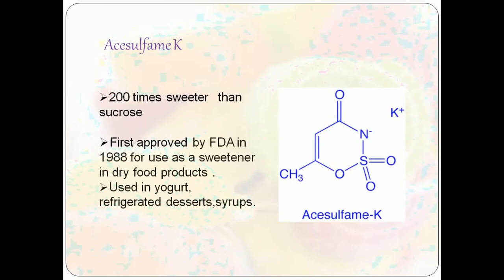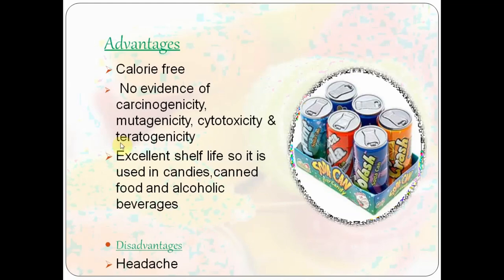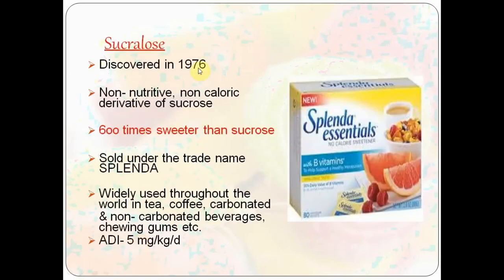Acesulfame-K is 200 times sweeter than sucrose and was first approved by the FDA in 1988. It is commonly found in yogurt, refrigerated desserts, and syrups, sold under brand names Sunett and Sweet One. It is calorie free with excellent shelf life and no evidence of carcinogenicity or cytotoxicity, though headache is a disadvantage. Sucralose was discovered in 1976 and is non-nutritive and non-caloric, 600 times sweeter than sucrose, sold under the trade name Splenda, found in tea, coffee, and carbonated and non-carbonated beverages. It is non-cariogenic with zero calorific value; diarrhea, dizziness, and stomach pain are disadvantages.